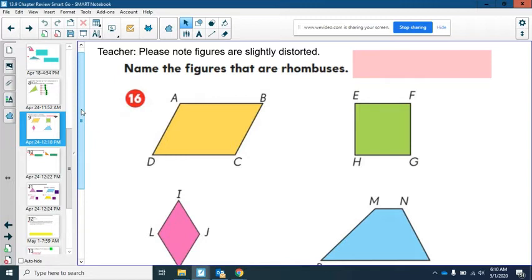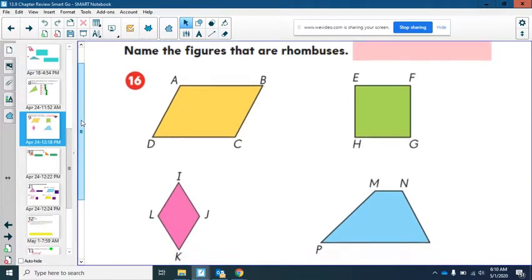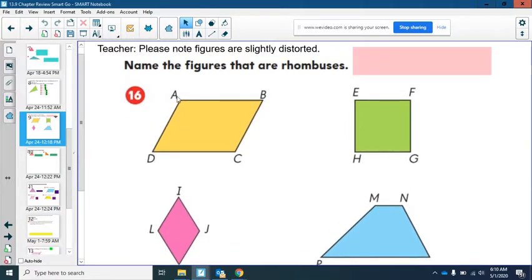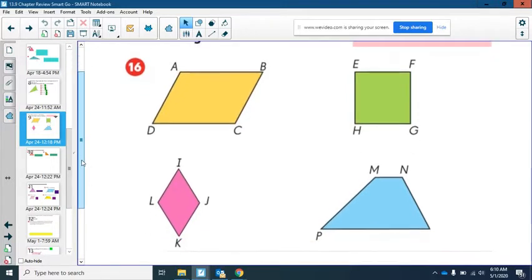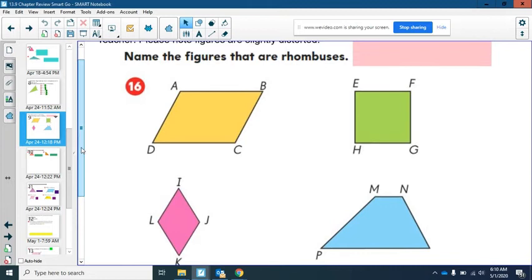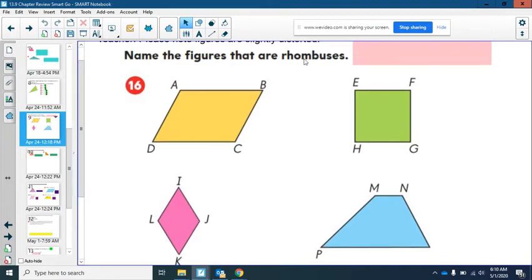So get ready to play, get ready to pause and try these questions, and let's see how you do. For our first question, picking up where we left off from yesterday, name the figures that are rhombuses. So you've got four figures here. Think about what you know about rhombus, the properties of a rhombus.